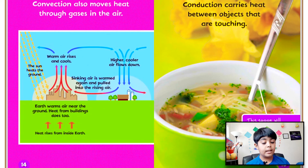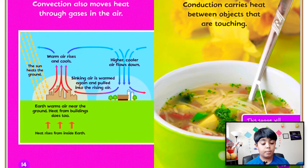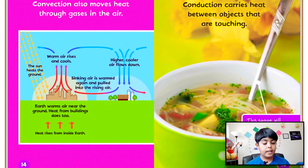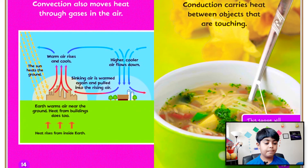As you can see, the sun heats the ground, warm air rises and cools, sinking air is warmed again and pulled into the rising air, and higher cooler air flows down. The earth warms air near the ground, and heat from buildings does too. Heat also rises from inside the earth. Conduction carries heat between objects that are touching.